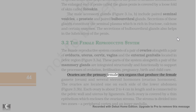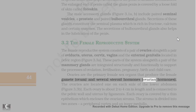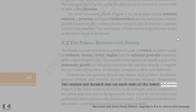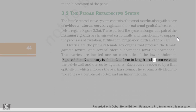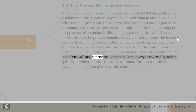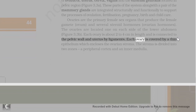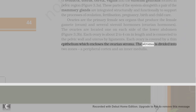Ovaries are the primary female sex organs that produce the female gamete (ovum) and several steroid hormones called ovarian hormones. The ovaries are located one on each side of the lower abdomen. Each ovary is about 2-4 cm in length and is connected to the pelvic wall and uterus by ligaments. Each ovary is covered by a thin epithelium which encloses the ovarian stroma. The stroma is divided into two zones: a peripheral cortex and an inner medulla.